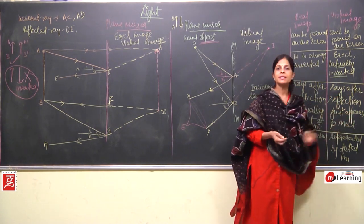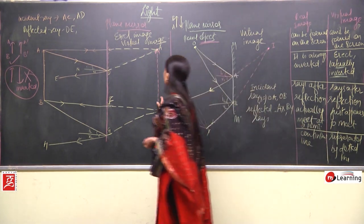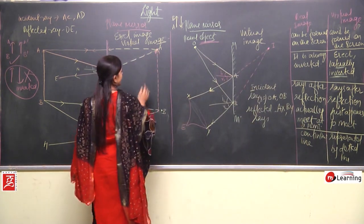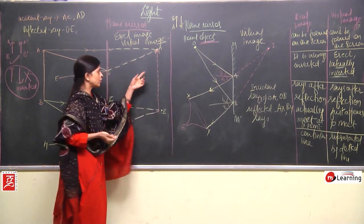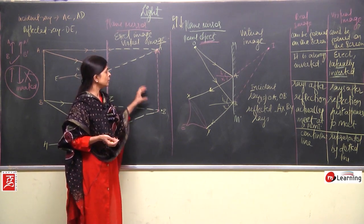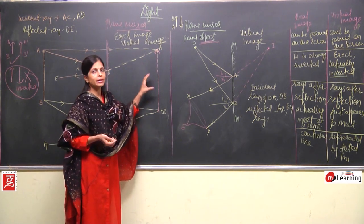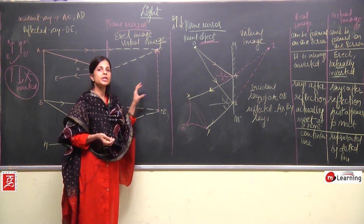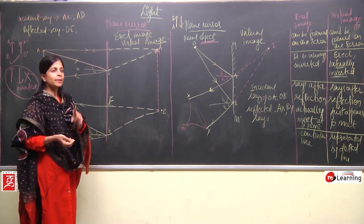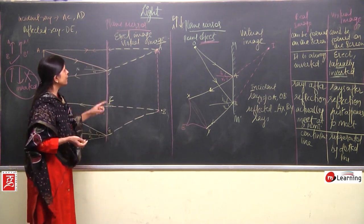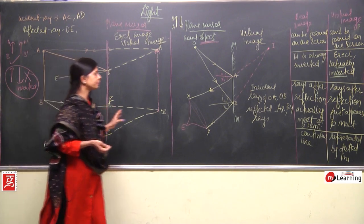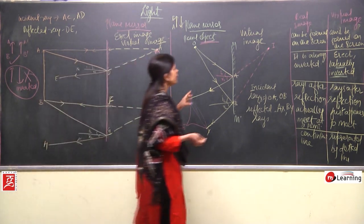Virtual images are always denoted by dotted lines. I have shown this with a dotted line because it is a virtual image. In a plane mirror, always the erect and virtual image will be formed.